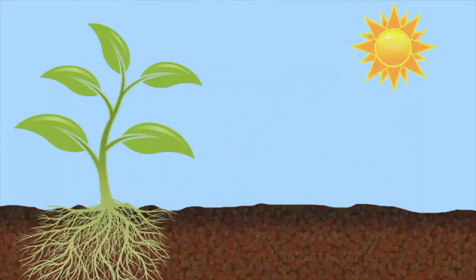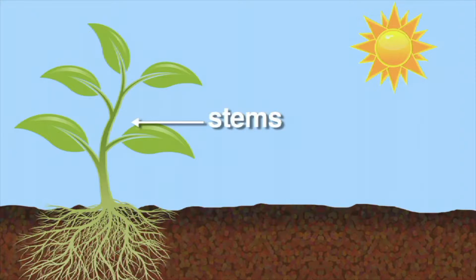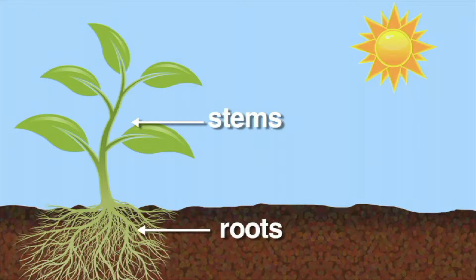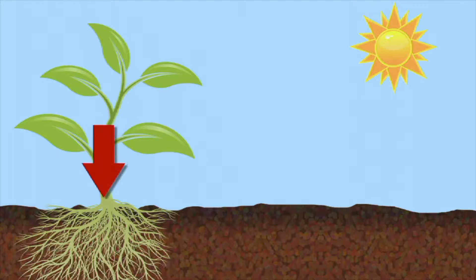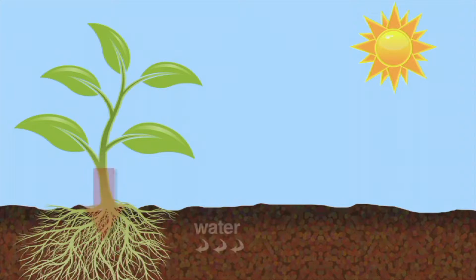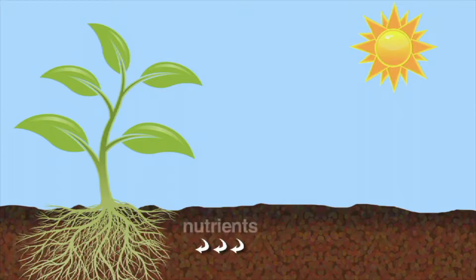Most plants grow in the ground, with stems above and roots below. The roots of plants perform two main functions. First, they anchor the plant to the ground. Second, they absorb water and various nutrients dissolved in water from the soil.